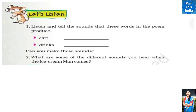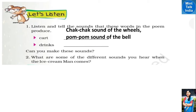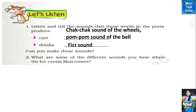Now let's listen and write — listen and identify the sounds that these words in the poem produce. 'Kart' — the ice cream man's cart: when it passes our house, we hear the chak-chak sound of the wheels, or pom-pom sounds if bells are attached. If there is music playing in the cart, we can hear that too. 'Drinks' always make a fizz sound.